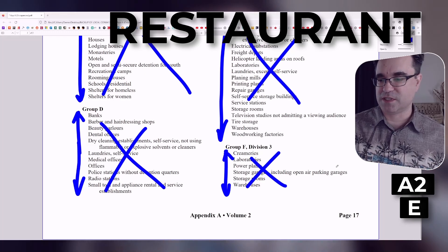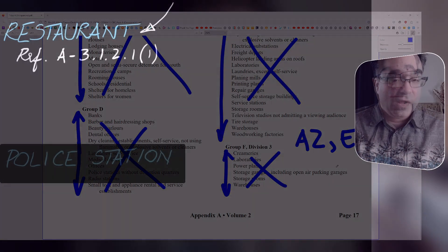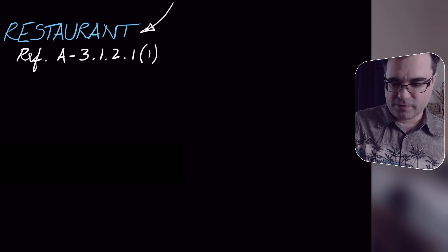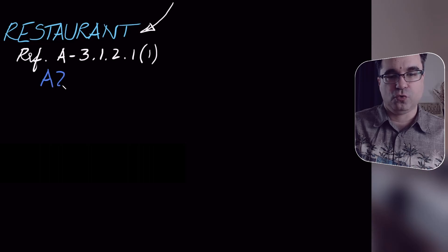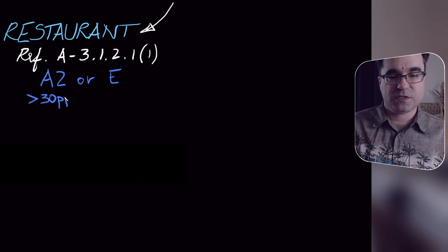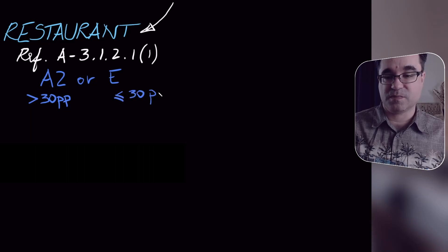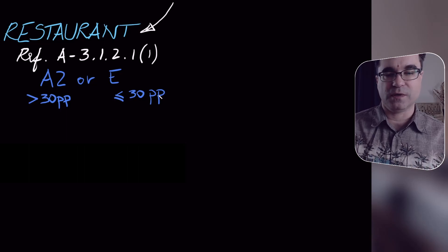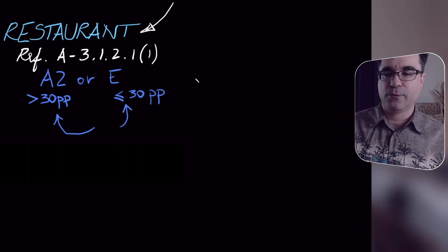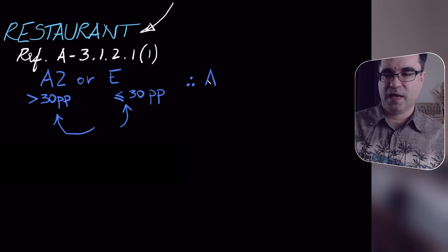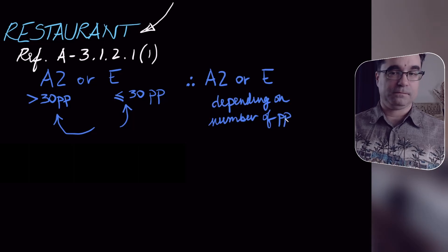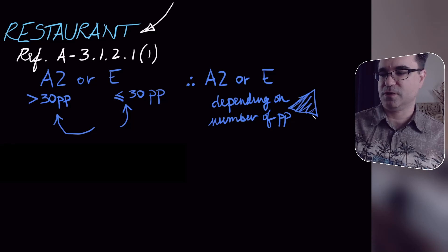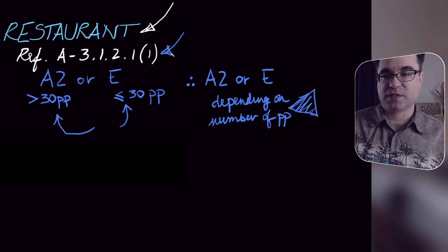So we are now left with two choices: A2 or E. It's dependent on whether or not there are more than 30 people expected to use the space. If this were a real-life scenario, you would have to ask how many people are going to be using this restaurant, because that will either point to A or E. For the purposes of this homework, lacking any other information, I would accept A2 or E depending on the number of people. This is a good answer because it also provides the reference that was used.